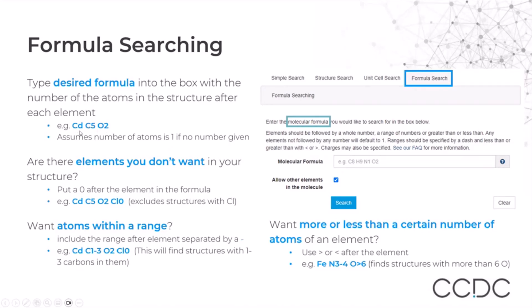If there's any element that you do not want in your structure, then you can add it by putting a 0 after the element. In this case, we want to exclude chlorine and we wrote Cl0.